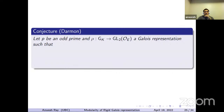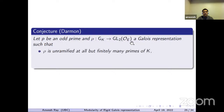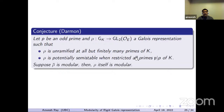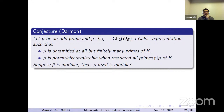Here is the conjecture of Darmon. Suppose we have an integral Galois representation that is unramified away from finitely many primes and satisfies the condition of being potentially semi-stable at primes above P. Then if rho-bar is modular, rho itself is modular. This is the modularity lifting conjecture we assume in order to explain Darmon's theorem, which establishes modularity of these rigid Galois representations.